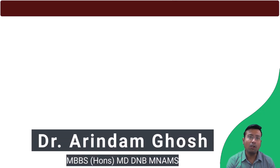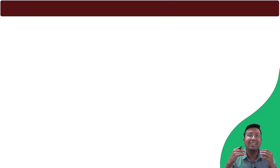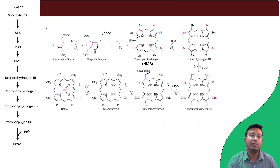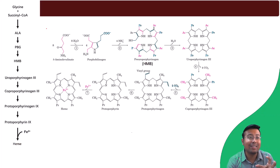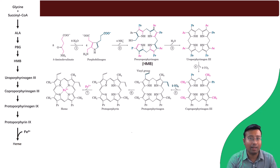Hi students, we all know remembering the steps of porphyria — especially each intermediate as well as the enzymes — is a daunting task if you are going through it for the first time. In today's video I will be giving you an easy mnemonic by which you can remember not only the intermediates but also the enzymes and the diseases. You do not need to stress and remember the sequence in a complicated way.